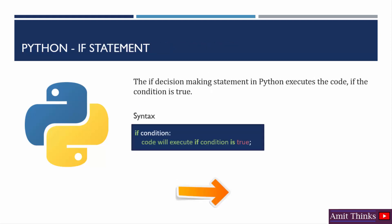The if statement is used to execute the code only if the condition is true. We have the syntax here — we set the condition. For example, if age is greater than 18, then the below line will get executed. That means if the age is greater than 18, the candidate can vote. This is the if statement.